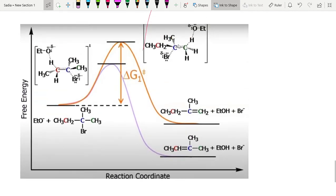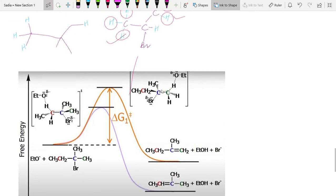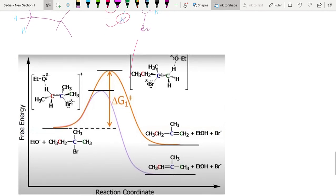These are two things that are required in Zaitsev and Hofmann's rule. I will repeat that whenever we have more substituted and whenever we are using smaller base, it will give us the Zaitsev rule, and we have less substituted alkene in presence of a bulkier group, we will have Hofmann's rule. So this is all for right now, we'll discuss their mechanisms later on.